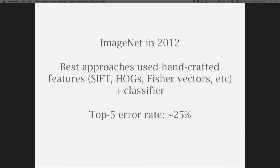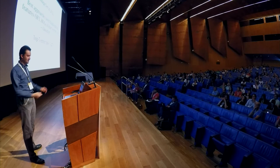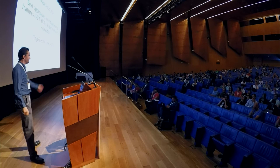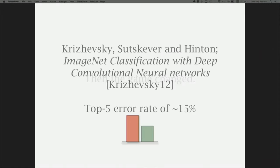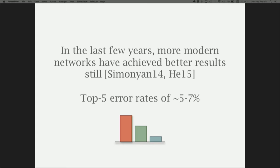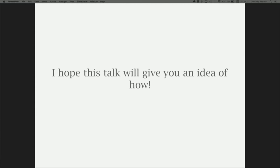In 2012, the best approaches used a lot of handcrafted features — things like SIFT, HOGs, and Fisher vectors — fed into a linear classifier, and the top-five error rate was around 25%. Then the game changed. Kozhevsky, Sutskever, and Hinton, in their paper 'ImageNet Classification with Deep Convolutional Neural Networks,' managed to get the error rate down to 15%. In the last few years, modern network architectures have gotten down further — now around 5% to 7%, with Google and Microsoft even reaching 3% or 4%.